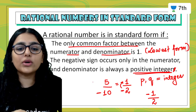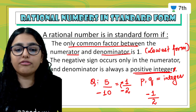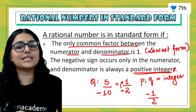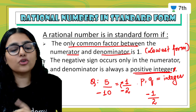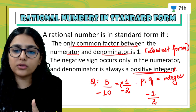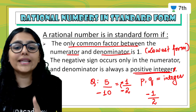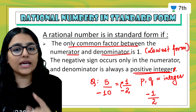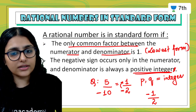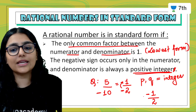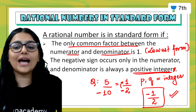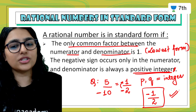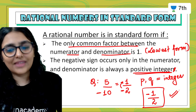So if you have a question in the exam to write 5 upon minus 10 in standard form: first do it in the lowest form, and if the negative sign is in the denominator, take it to the numerator. This becomes the standard form of the rational number.